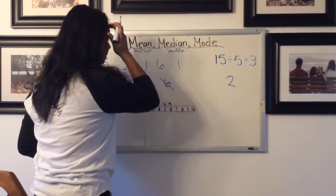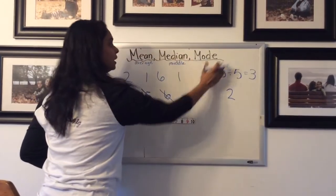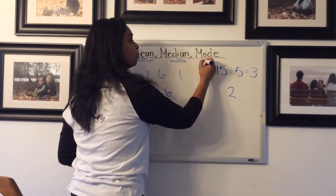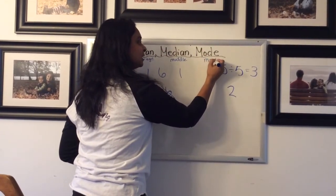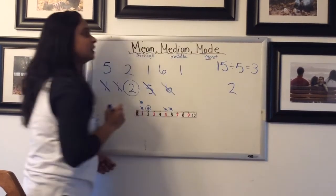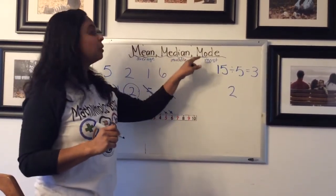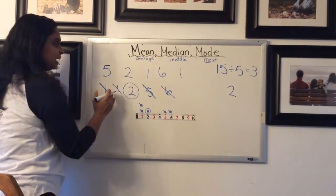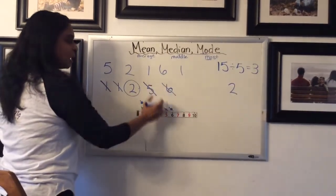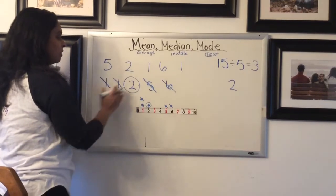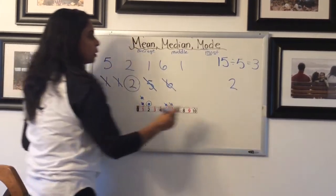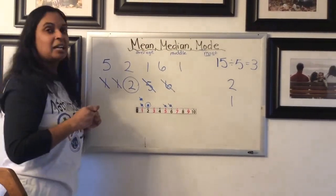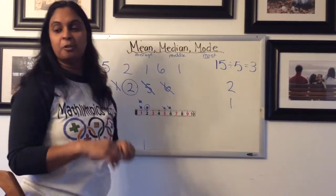Okay, so now for the mode, I always use the example of thinking of mode means most, using that M-O at the beginning of the words to remind you. So which data value shows up the most? So in this case, there's only one 6, one 5, one 2, and then there's two 1s. So our mode of the data is 1. The 1 shows up the most. So that's a little bit of review for you. I'm sure you remember from previous years doing some of this.